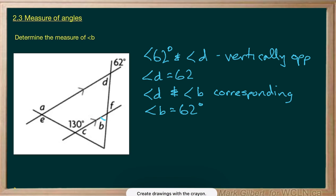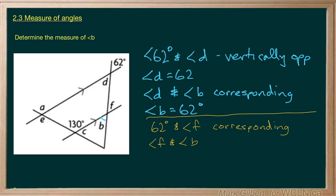So they are equal, which makes angle B 62 degrees. Now, another method that we could do, I'll just draw it down here, is that 62 degrees and angle F are corresponding.